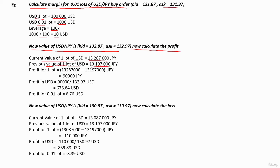To calculate profit, we take the difference. This is the profit in Japanese yen. To calculate profit in USDs, we divide that value by the current ask price. This gives the profit in USDs. To calculate profit for 0.01 lot, we divide it by 100. So this is the profit.